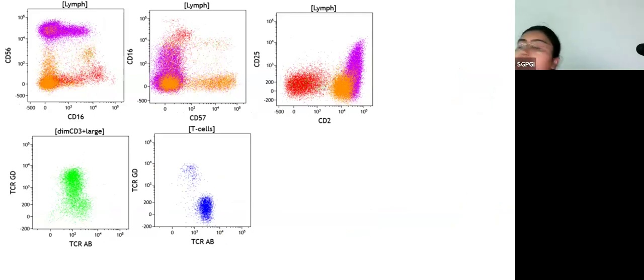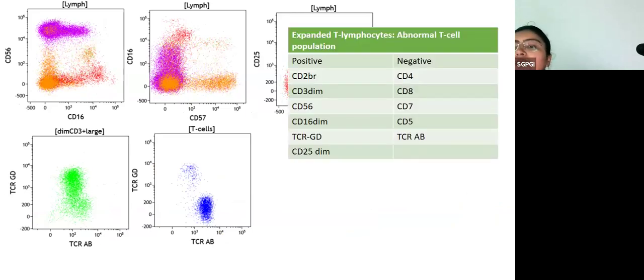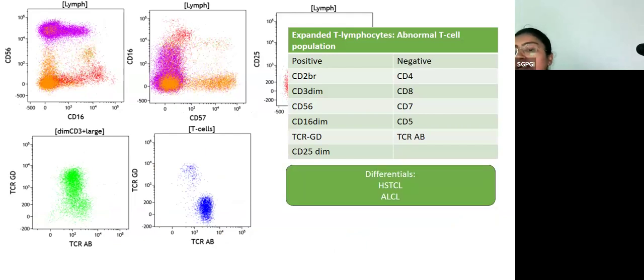If we have a look at all these markers, now the CD4-CD8 split seems to be more in favor of dual negativity for our abnormal population. We also look at other markers here. These dim CD3 positive cells are expressing CD56. They are expressing a little bit of CD16. As expected, they are CD2 positive. These cells also expressed TCR gamma delta. In this case, what are the differentials? It is a CD4 negative, CD8 negative, very blastoid abnormal looking tumor with a dim expression of surface CD3.